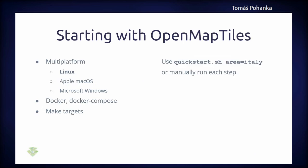How do you get started with OpenMapTiles? It is multi-platform, so you can use any operating system, though Linux is the base tested OS. You need Docker Compose and the ability to run make targets. After downloading the repository from GitHub, you can run the QuickStart shell script and at the end have your own vector data in one MBTiles file, or you can run each step manually.